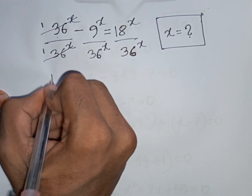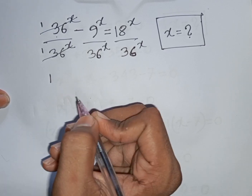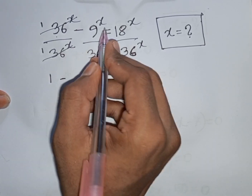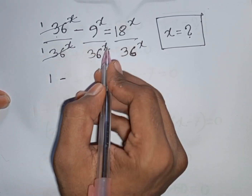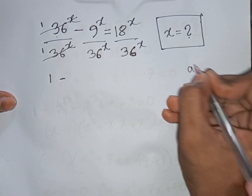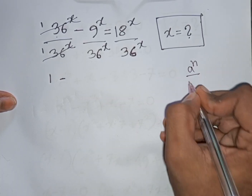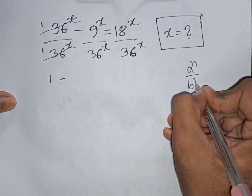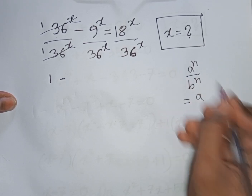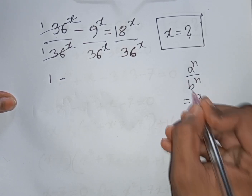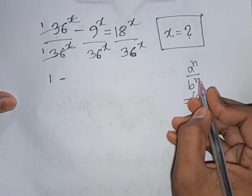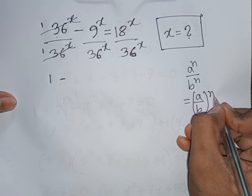Dividing by 36^x — same power but different bases. According to the exponential rule, a^n divided by b^n equals (a/b)^n, with a common power n in brackets.